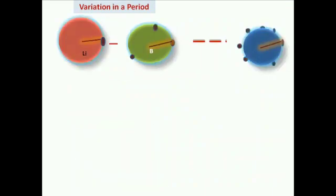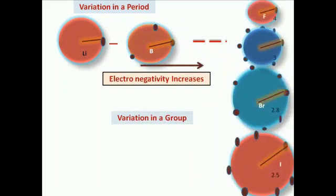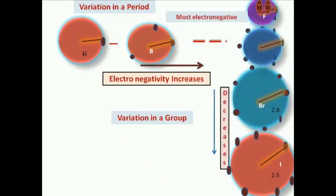Looking at the variation of electronegativity in a periodic table: if we move from left to right in a period, electronegativity increases. If we move down the group, electronegativity decreases. Therefore, fluorine is the most electronegative atom in the periodic table.